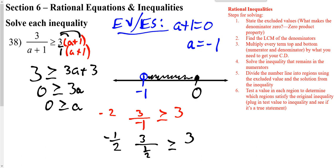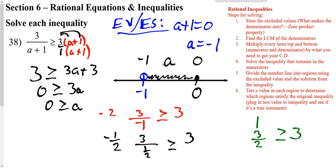We could try a number to the right — try 1. Plugging in 1, I get 3 over 1 plus 1, which is 2. Is 3 halves greater than or equal to 3? Well, 3 halves is not greater than or equal to 3, so I'm not going to shade. Your answer is only in between. When you're shading in between, you put your variable in between your two numbers. With negative 1 being an open circle, that's a less than. With 0 being a filled-in circle, that's less than or equal to — giving you negative 1 is less than a is less than or equal to 0.